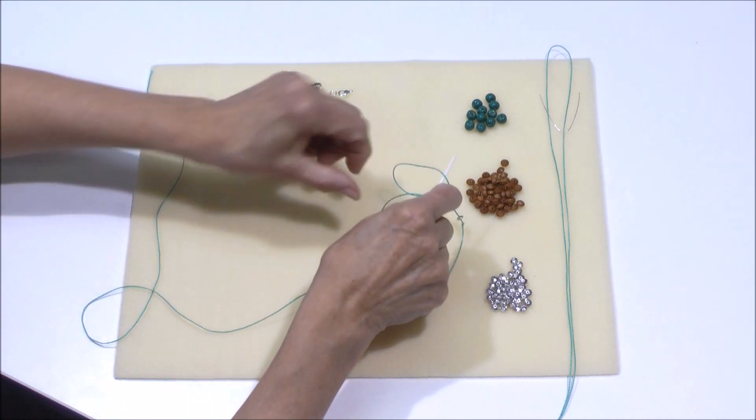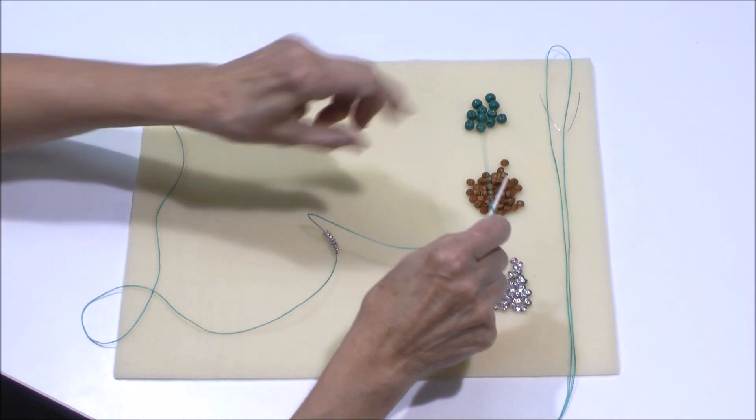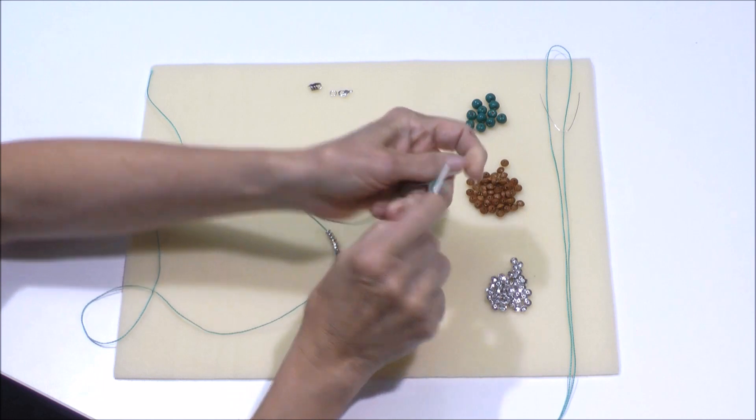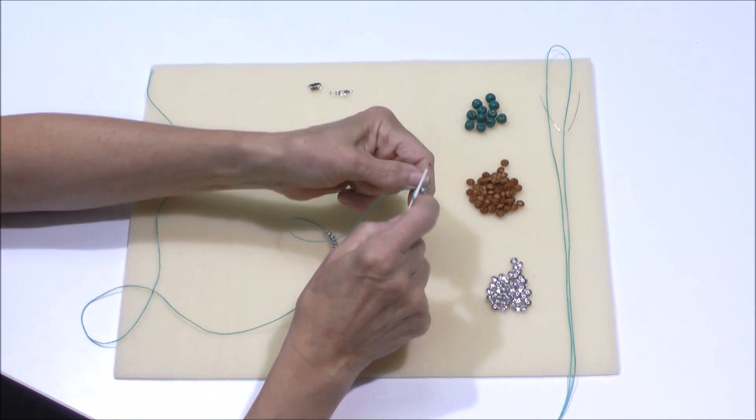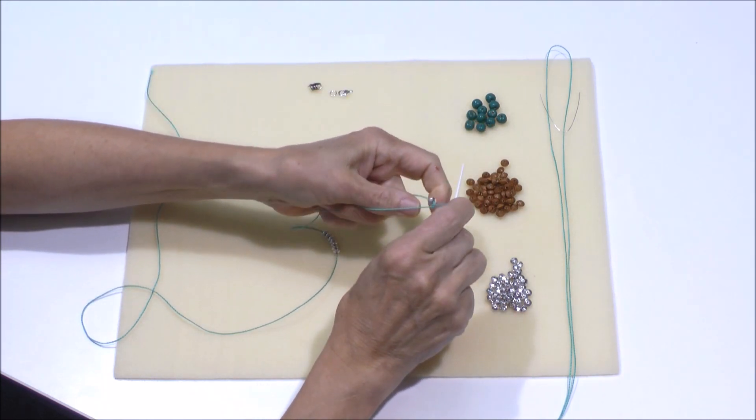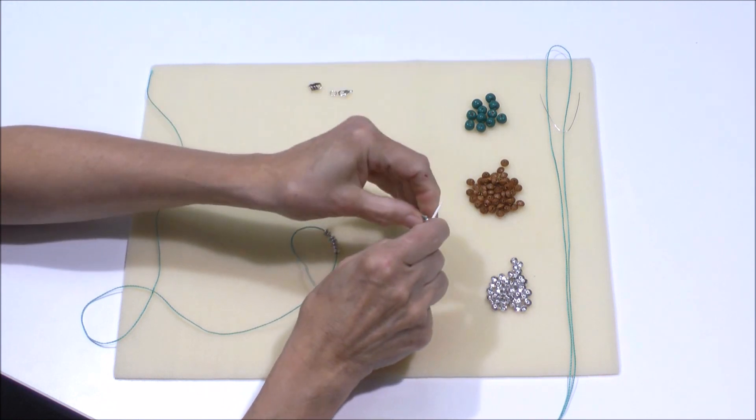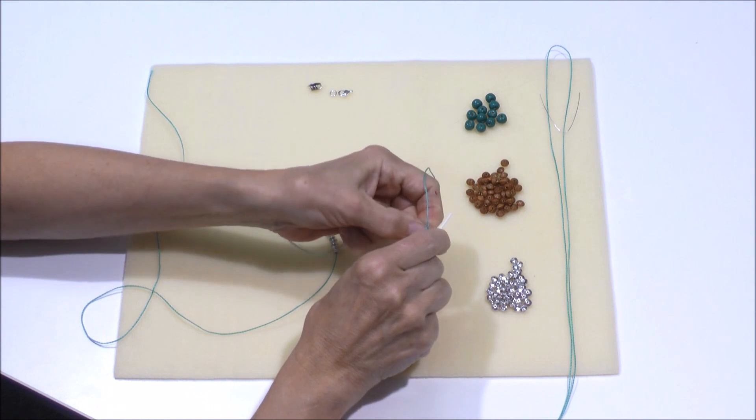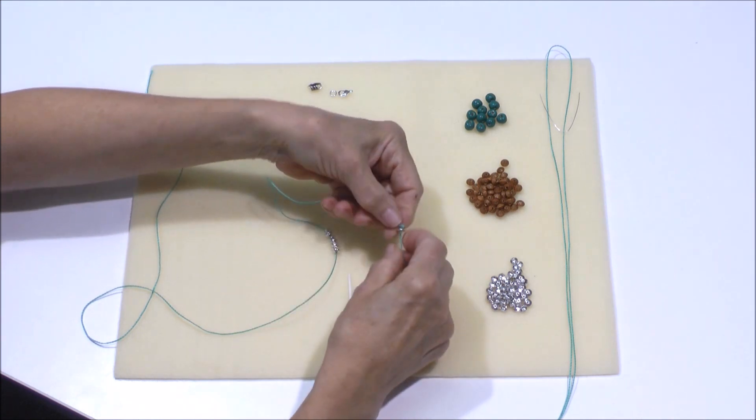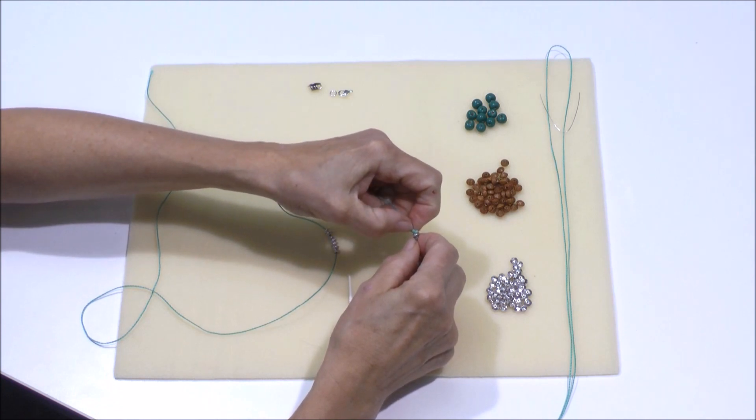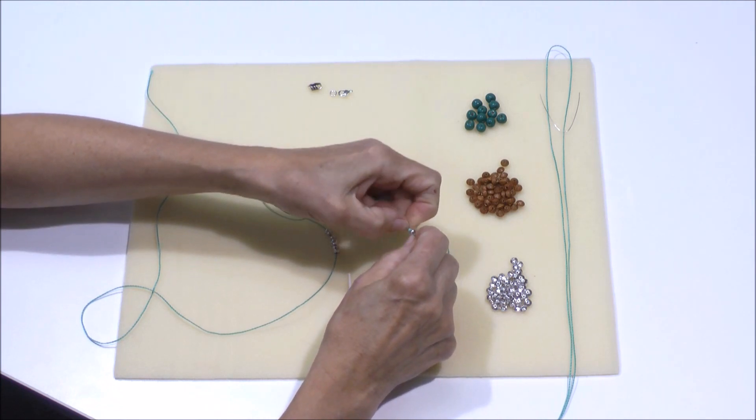And then I can put my little pick in the loop, hopefully keeping the bead on the other side of the loop, tighten it down, and then the pick lets me slide the knot up close to the bead. I'm going to pull the pick out, and then I'm going to both pull on this cord as I use my fingernail to push the knot up.